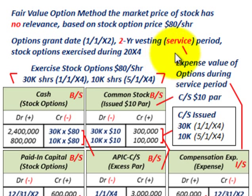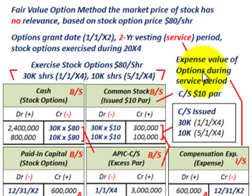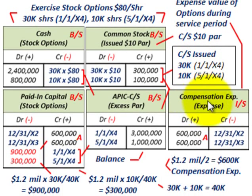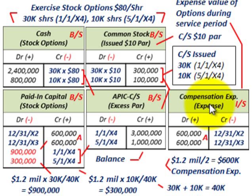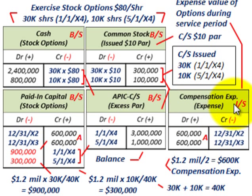When we set up the stock option plan, we first have to set up what we call compensation expense on our income statement. This is what the company expects they'll have to pay in compensation to these executives — similar to wages but different because they're getting stock they can buy into the company. Based on this compensation expense, we set up an equity account, a paid-in capital account for those stock options. Paid-in capital is on our balance sheet; compensation expense is on our income statement.